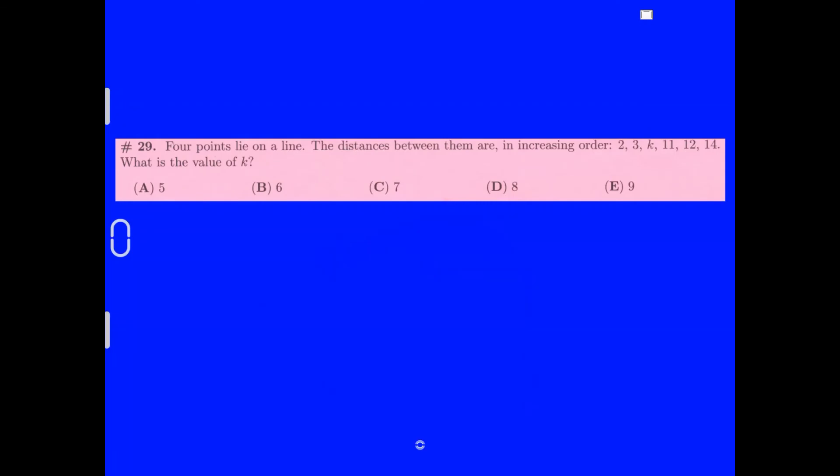Four points lie on a line. The distance between them are increasing in order: 2, 3, K, 11, 12, 14. What is the value of K? If it's 4 points on a line, let's just do 4 circles. Right here is where K would be, and this would all be 14. Let's do 2 ways of making 14. We can do 2 and 12, and 3 and 11. To get K, we would do the 2 plus 3, because that would be this part right here. If we subtract that by 14, we will get what K is. 2 plus 3 is 5, so 14 minus 5 will get you 9. Our answer is E, 9.